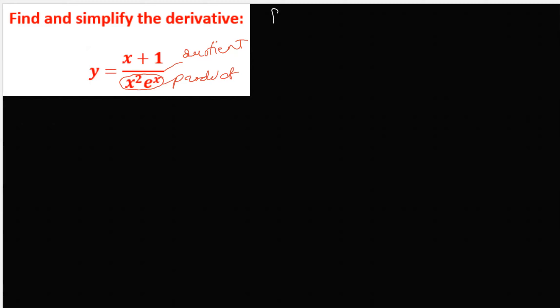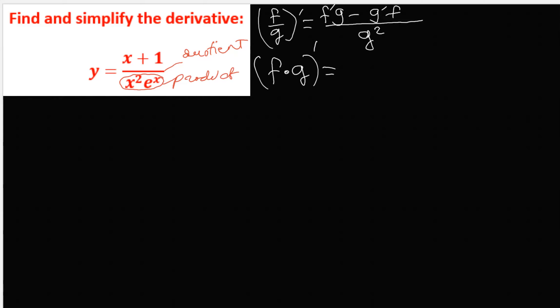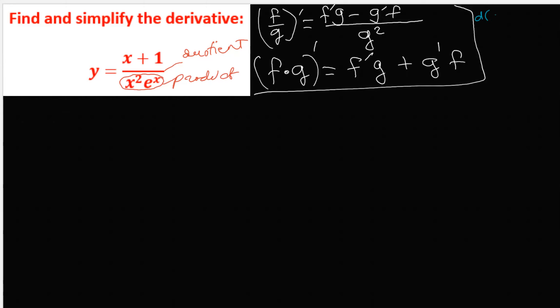Here we go. The quotient rule says the derivative of a quotient has G squared on the bottom. The numerator is the derivative of the first times the second minus the derivative of the second times the first. The product rule says derivative of the first times the second plus the derivative of the second times the first. Those two rules are used along with the derivative of a power function — the derivative of x to the n is n·x to the n minus 1 — and the derivative of e to the x, which is e to the x.